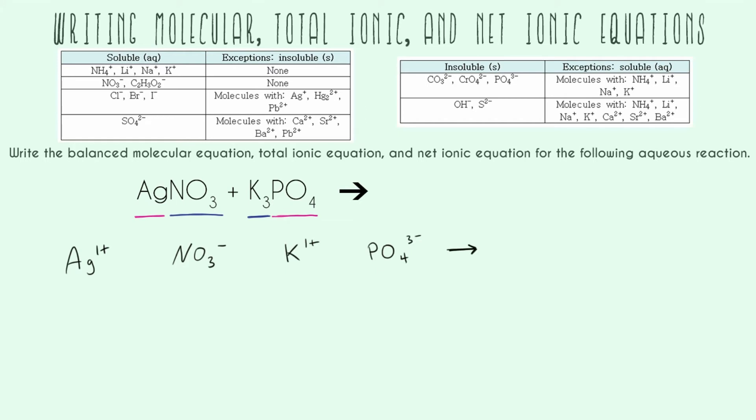Now we're ready to start predicting our products. You can see I've color coded it. Our inside goes with our inside, and our outside goes with our outside. That's the way to memorize it. The reason is we have to pair positive with negative - that's what's attracted to each other. We can't have silver and potassium together because they're both positive. We can't have nitrate and phosphate together because they're both negative.